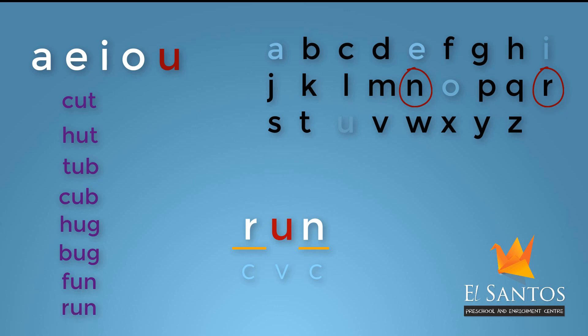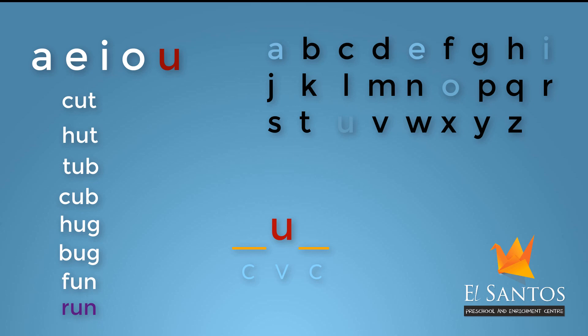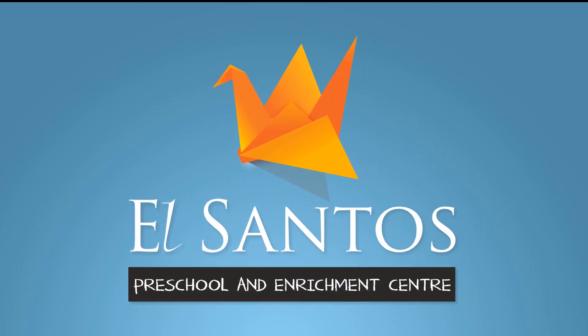Let's go over all the words one more time: Cut, Hut, Tub, Cub, Hug, Bug, Fun, Run. Make more words using different sounds from the consonant list and try to read them. Remember, all the words you form need not make sense — just read them using the phonetic sounds. I will meet you with another interesting lesson. Thank you.